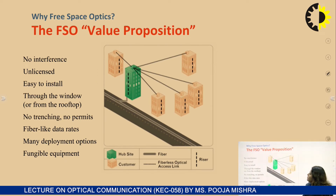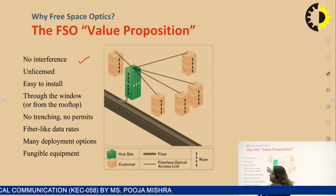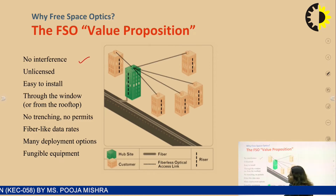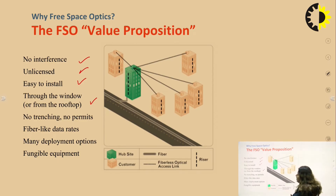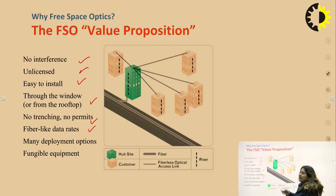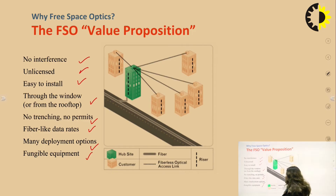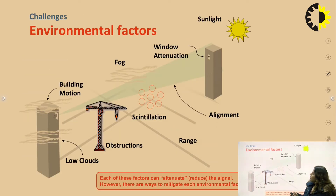The FSO value propositions include: no electromagnetic interference since laser light is used; the system is unlicensed and easy to install through windows or from rooftops, making it suitable for high-rise buildings; no trenching or permits required; fiber-like data rates in the gigahertz range; many deployment options with simple equipment. The only key requirement is line-of-sight communication between the transmitter and the receiver.